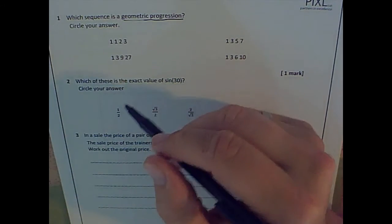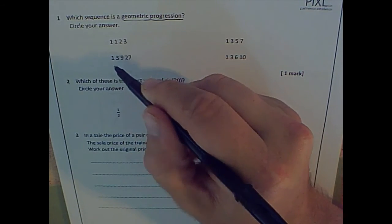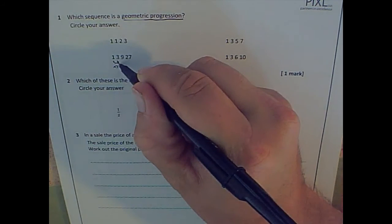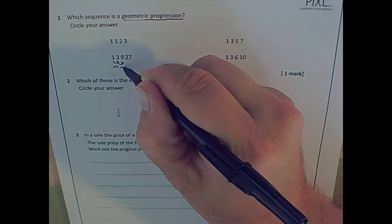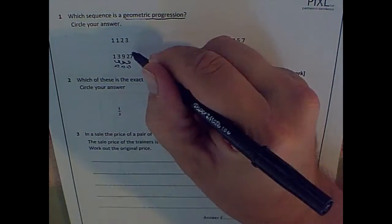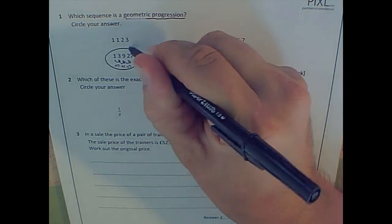So the geometric progression here is this one here because each time it's multiplied by something. In this case, the previous term is multiplied by three to generate the next term. So that is my geometric progression.